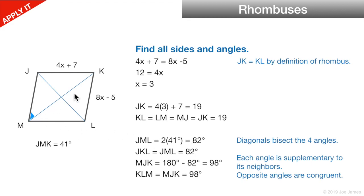Opposite angles in a rhombus are equal, so M and K are both 82 degrees. Neighboring angles are supplementary, so angle J equals 180 minus 82, which is 98 degrees. J and L are opposite, so they're both 98 degrees. That solves all the sides and angles of this rhombus.